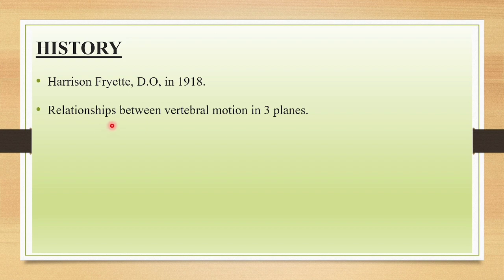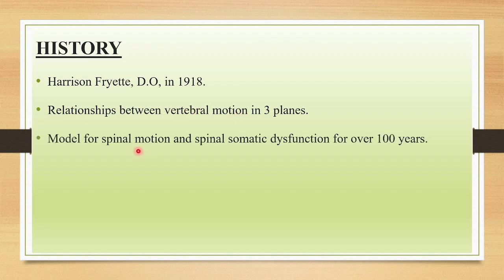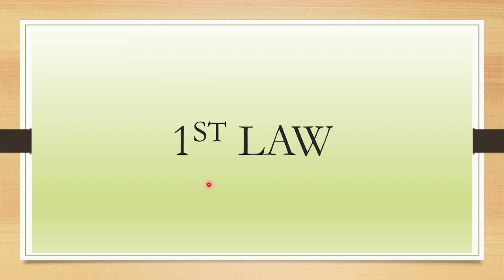Fryette found there is a certain relationship between the vertebral motions in three planes: the flexion-extension plane, the rotation plane, and the lateral flexion plane. Fryette's principles have been used as a model for spinal motions and spinal somatic dysfunctions for over a hundred years. Now, coming to the three different laws.